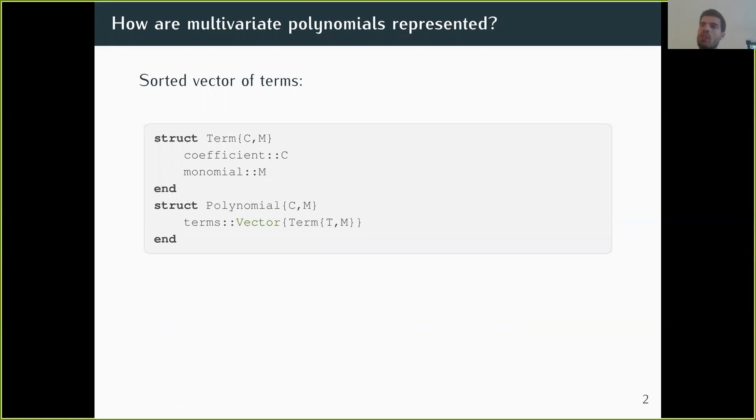So how do you represent these multivariate polynomials? One way is to have a sorted list of terms. A term is a coefficient, think of a number times some monomial, which is a product of variables to the power of some exponents. The polynomial is just the sum represented as a vector of terms.